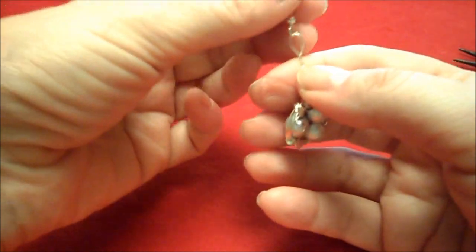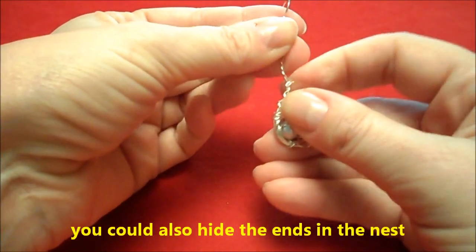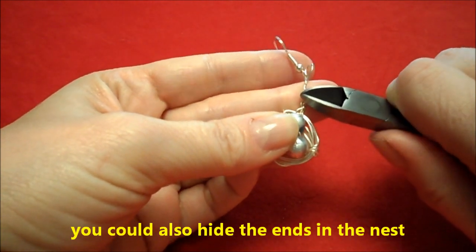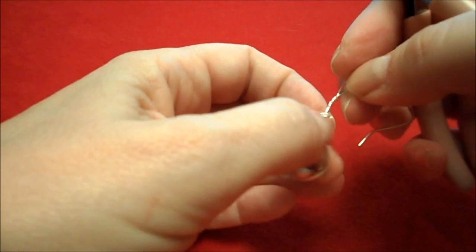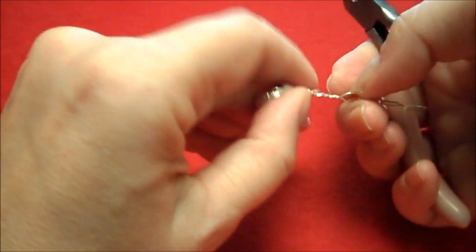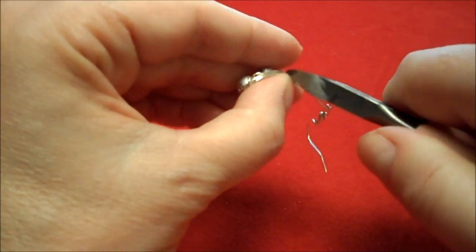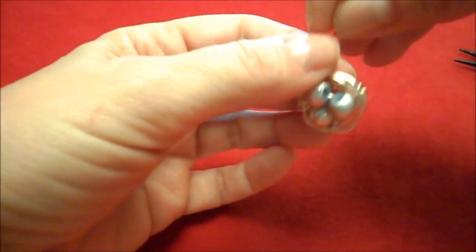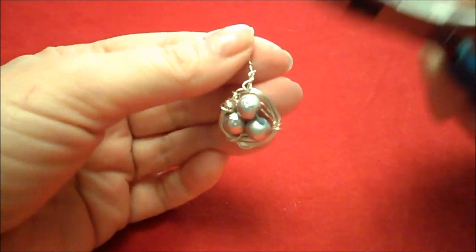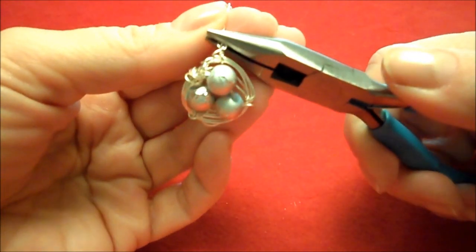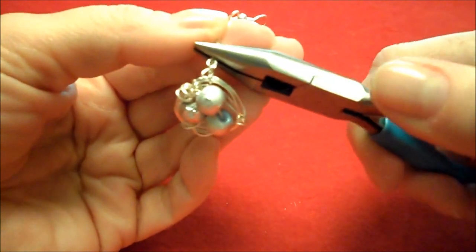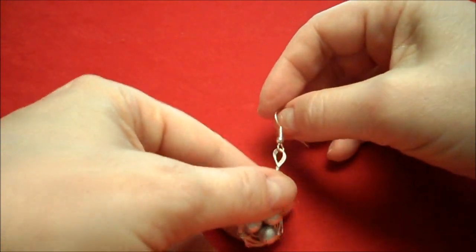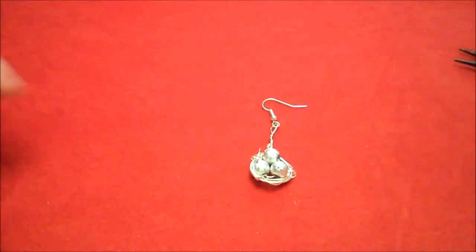Make sure it's forward. I'm going to trim off that end. And use the flat nose pliers just to push it down so there's no rough edges. And there we have our bird's nest earring. See you next time.